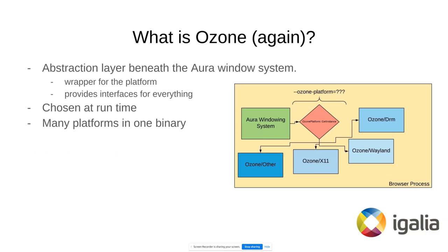So what's Ozone? Ozone is basically an abstraction layer which in terms of Chromium lives beneath the Aura windowing system. It provides a wrapper for the platform so that you can choose any backend that is implemented, like X11, Wayland, or even DRM on Linux, and also headless. In this presentation I'm going to implement GDK. Everything can be chosen at runtime, so nothing stops us from running Wayland, X11 or headless in the same binary.